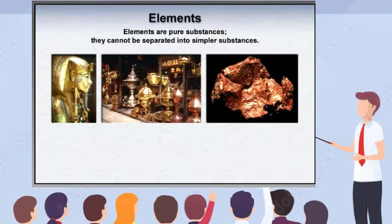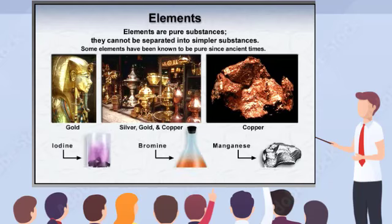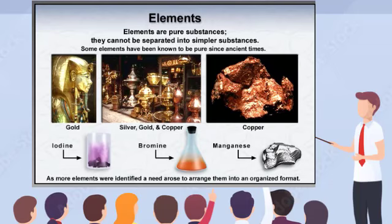Elements are pure substances. They cannot be separated into simpler substances. Some elements, such as gold, copper, and silver, have been known to be pure since ancient times. Others had to be separated from compounds before they could be identified. In the early 1800s, advances in scientific techniques allowed scientists to identify more and more elements, and they began to accumulate numbers for atomic mass and other physical properties. Eventually, a need arose to arrange the elements and the accumulating data into some type of workable format.